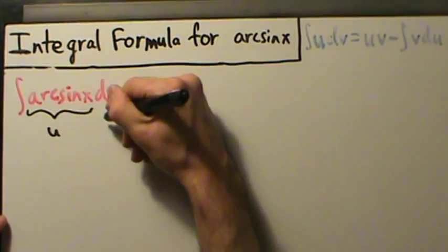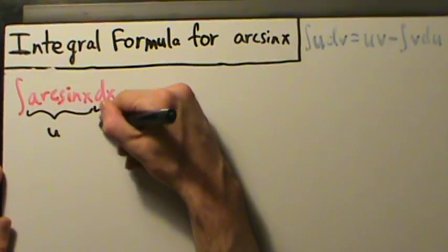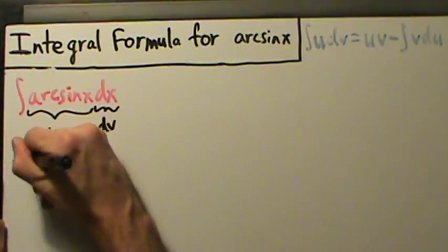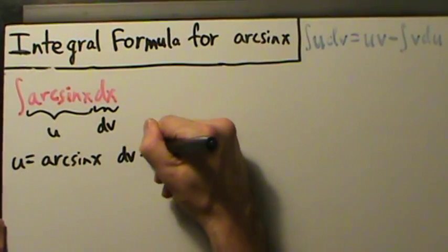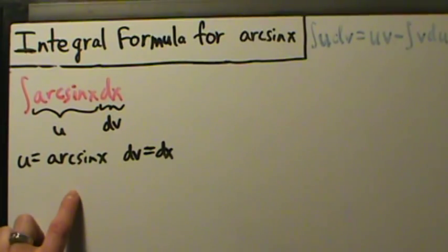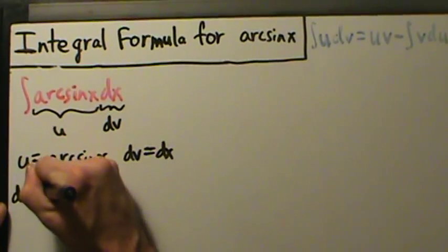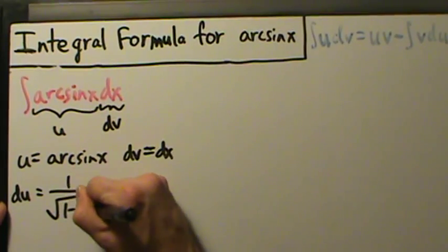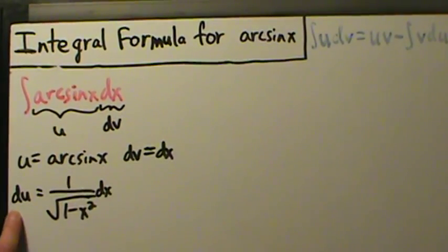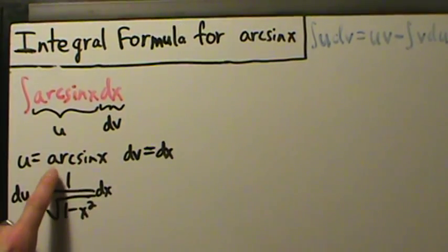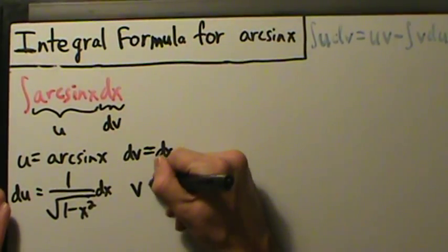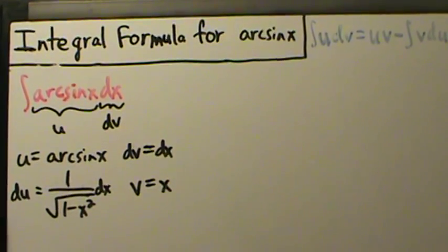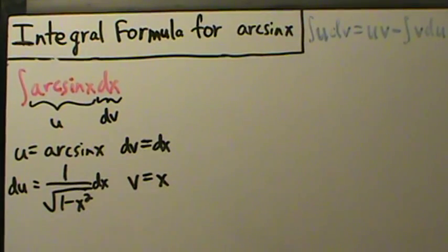So u is the arc sine of x. Once we choose u, dv is automatically everything else, including the dx. So u equals arc sine of x and dv is just dx. Since u is arc sine of x, du is 1 over the square root of 1 minus x squared, times dx. And since dv is dx, we integrate that to get v, so v is just x. Remember, no arbitrary constant on v when doing integration by parts.